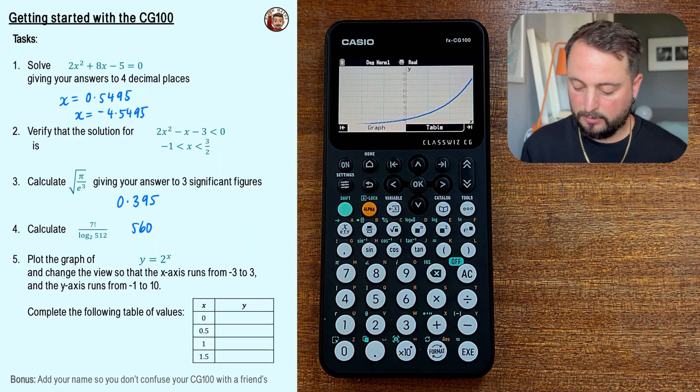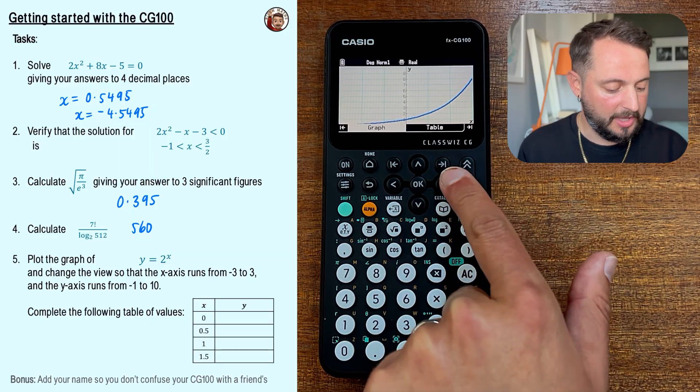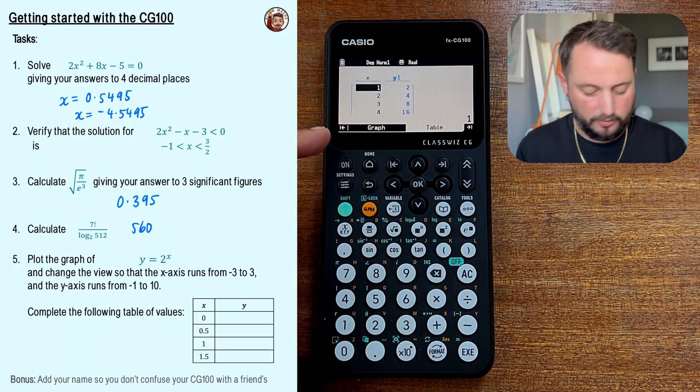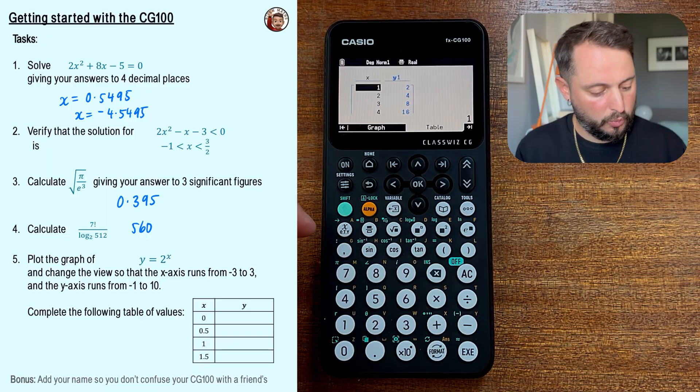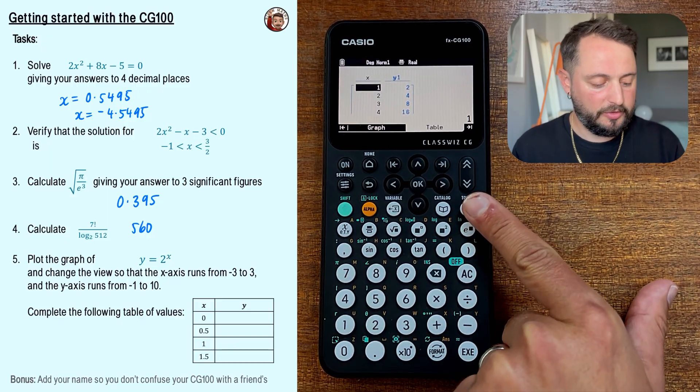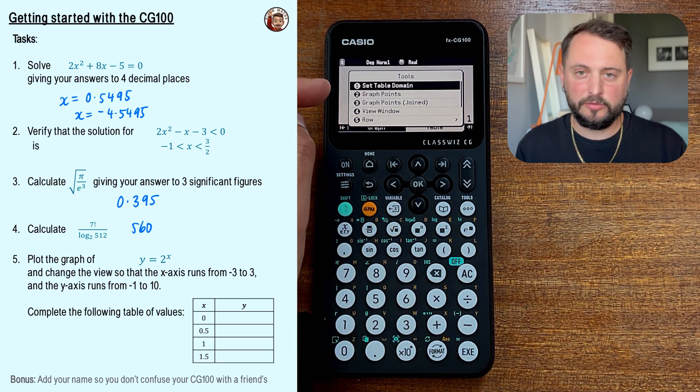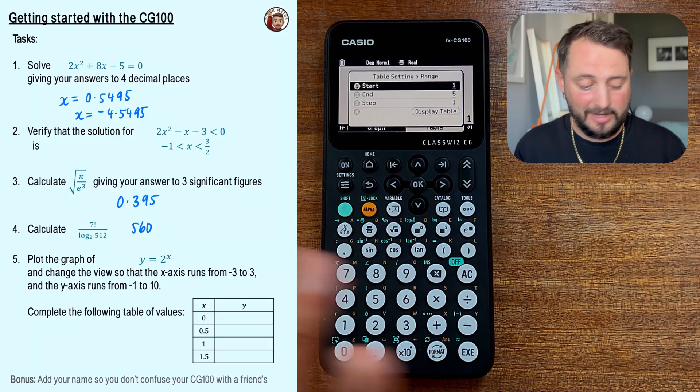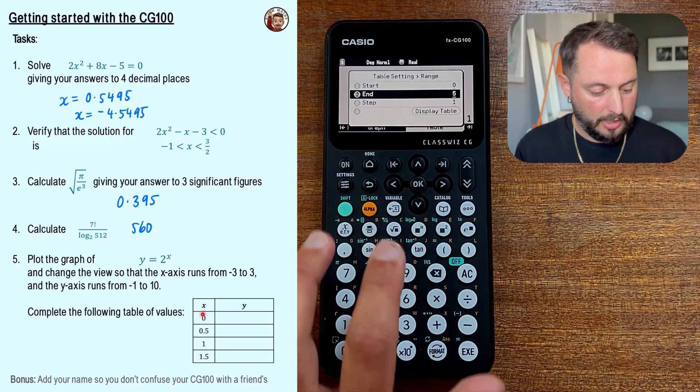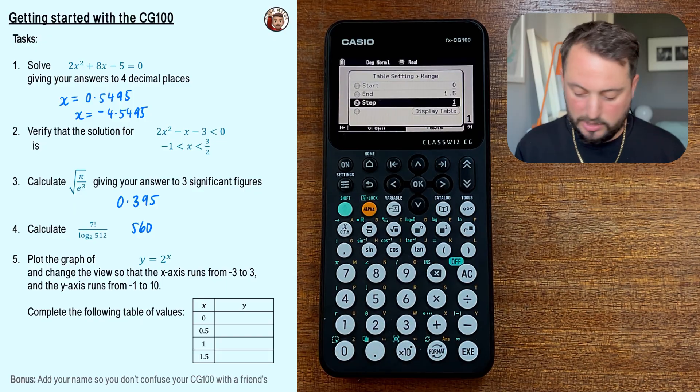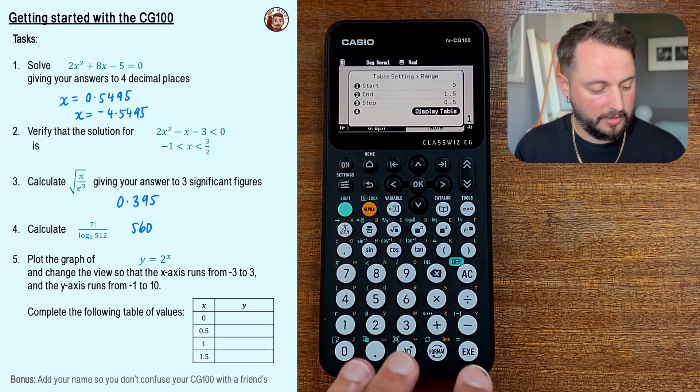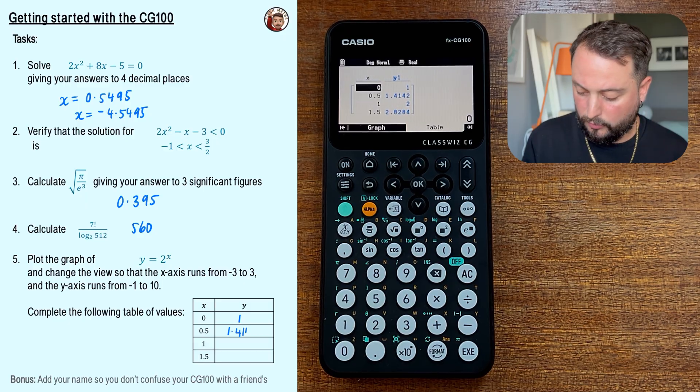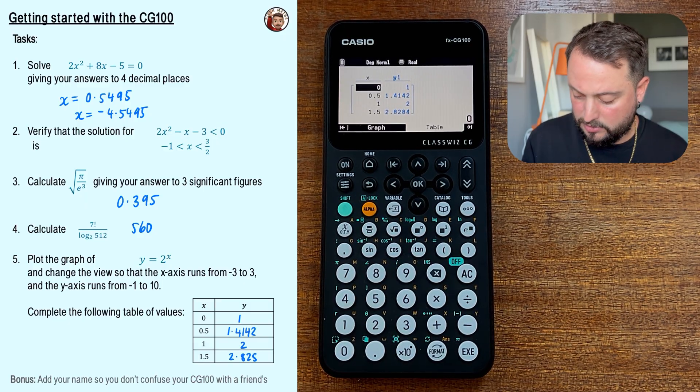Now there is a little bonus part of this to complete the following table of values. And you can see that if I press table here, it will take me with the tab button to go to that next part. Now we've nearly got what we're looking for. Apart from the x values, they have 1, 2, 3 and 4, but we want 0, 0.5, 1 and 1.5. So do you remember I mentioned about the tools button? If I press the tools button here, it's going to allow me to set the table domain. The table domain just means like the input values for the table. So I press OK. I'm going to say that it's a range of values. Don't worry about list for now. I'm going to start it at 0. I'm going to end it at 1.5 and you can see that mine is going up in steps of 0.5. I can then display the table and I've got the values that I'm looking for and I can just copy them straight across here. So that's 1, 1.4142, 2 and 2.8284.